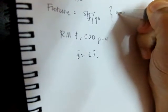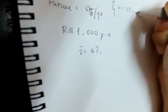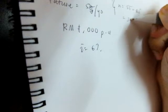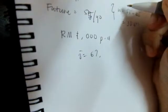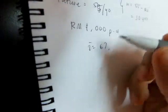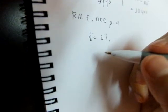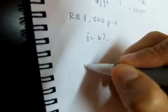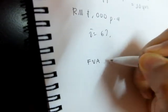So your N is basically 55 minus 25 equals to 30 years. So this is actually an annuity. So how to calculate the future value of an annuity?